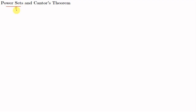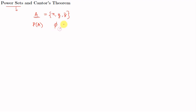First of all we will see what a power set means. Suppose we have a set A. The power set of A is denoted as P(A). It is a collection of all the possible subsets of A. For example, if we have A equal to the set {x, y, z}, then the subsets of A will include phi, the empty set, and we know that the empty set is a subset of any set.